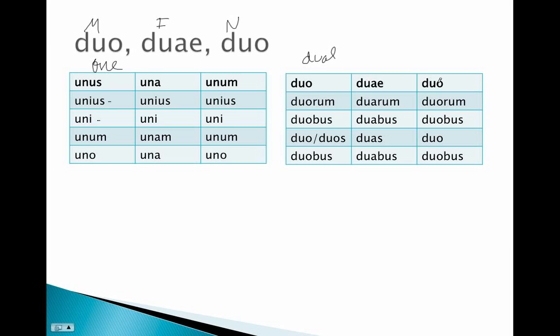So duo, duae, duo. Duorum, duarum, duorum. The genitive looks normal, and these are always referring to two things, so we can't have a singular. Duorum, duarum, duorum.